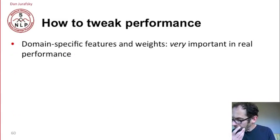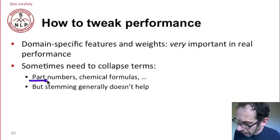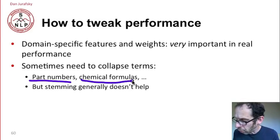Finally, we're going to want to tweak performance. Domain-specific features and weights are very important in real performance. Sometimes we need to collapse terms. For example, with part numbers in an inventory task, we might collapse all part numbers into a part number class, or chemical formulas into one named entity. But stemming generally doesn't help. You have to know whether you need to collapse terms or not.